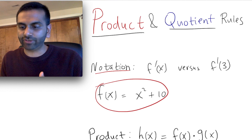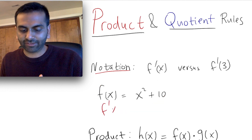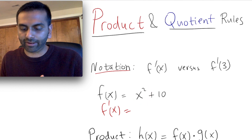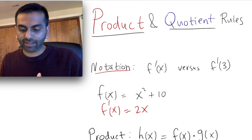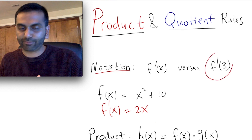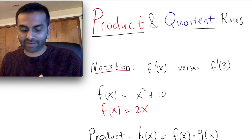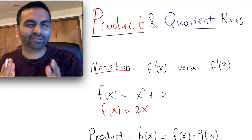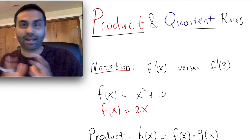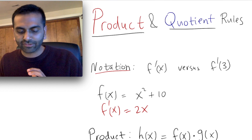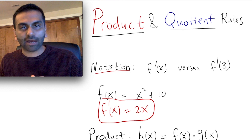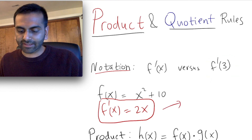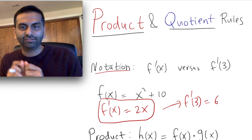For example, if this is your function, if I were to ask what's f prime of x, you would say the derivative of x squared is 2x — the 2 comes down — plus the derivative of 10 is 0, so the derivative is just 2x. But if I were to ask what's f prime of 3, I have to find the derivative first. A common misconception is people will try to plug in 3 first and then take the derivative. But if you did that, you'd always get 0 because the derivative of a number is always 0. You've got to find the derivative first, and then plug in to get f prime of 3 equals 6. That's how you get the slope when x is 3.